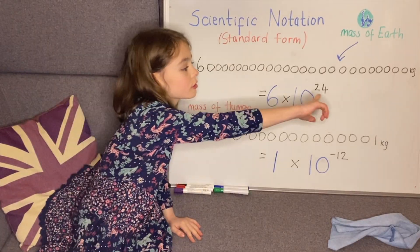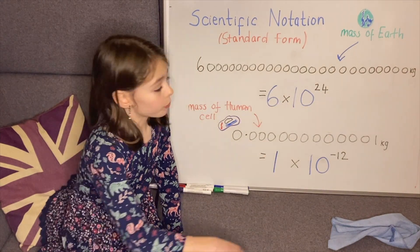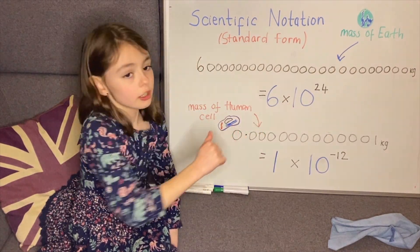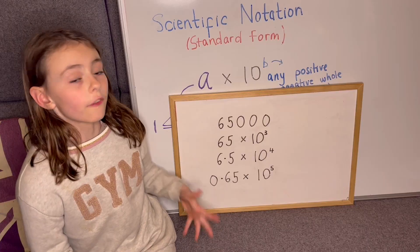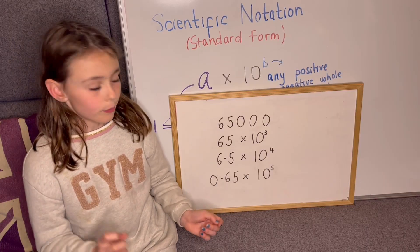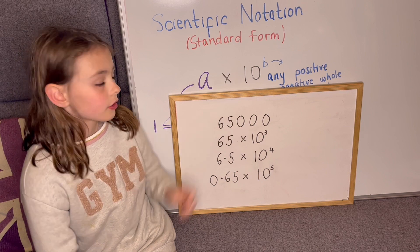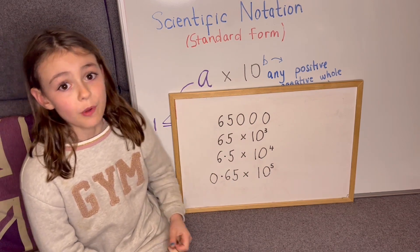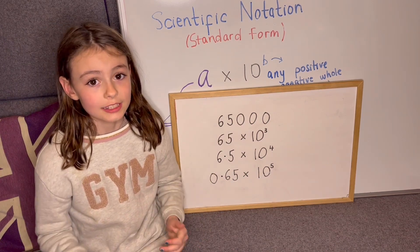Instead of using loads of digits to represent the number, standard form uses a smaller number multiplied by the power of 10. These are four different ways of writing the same number 65,000. These are just a few examples, but there's so many different ways of writing 65,000.